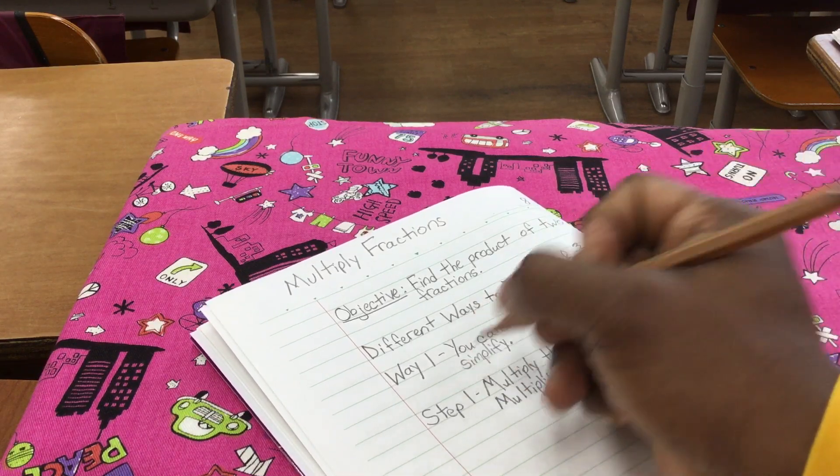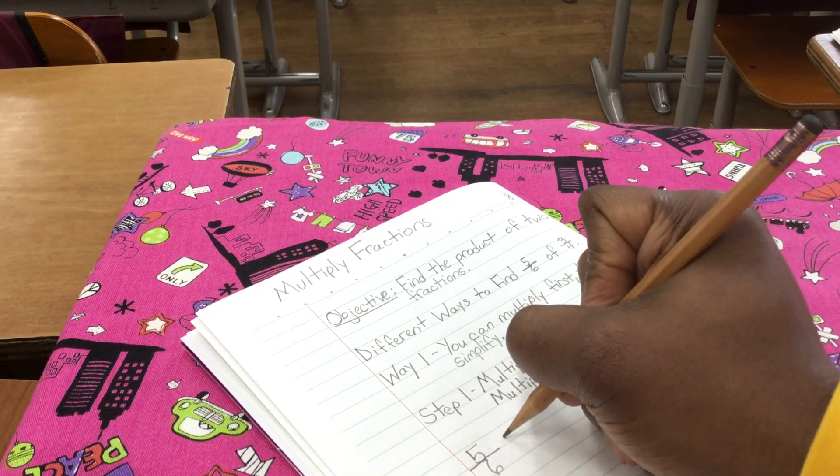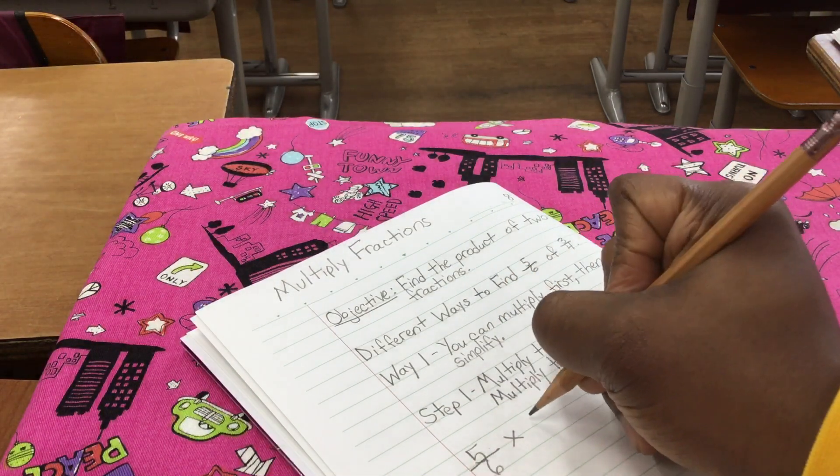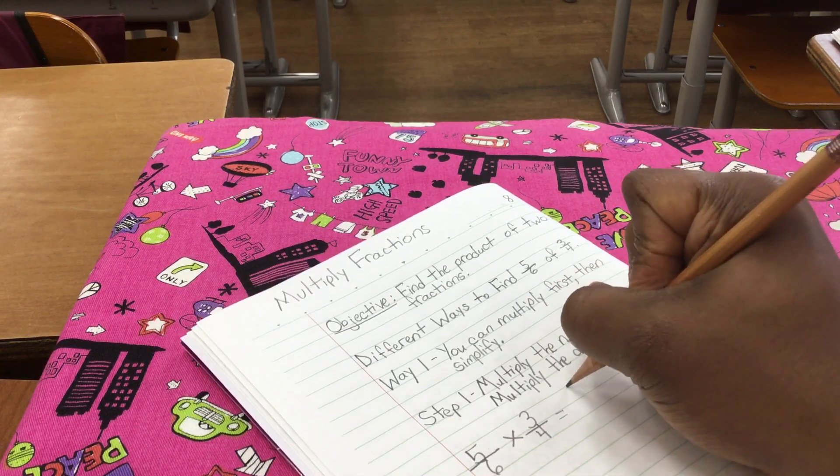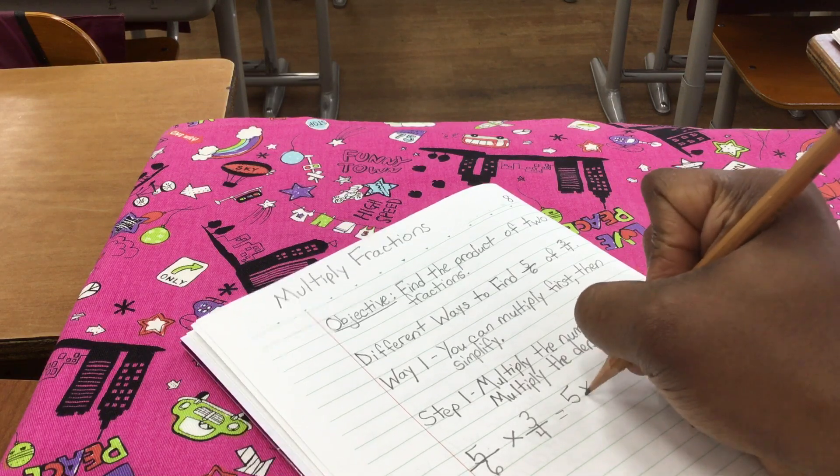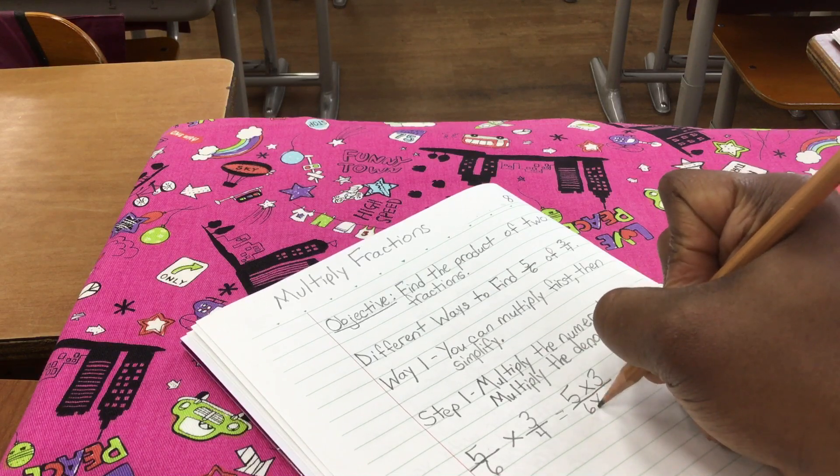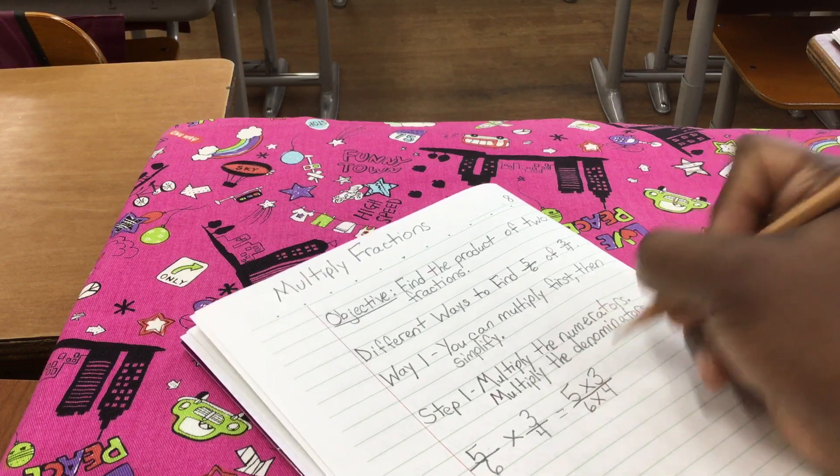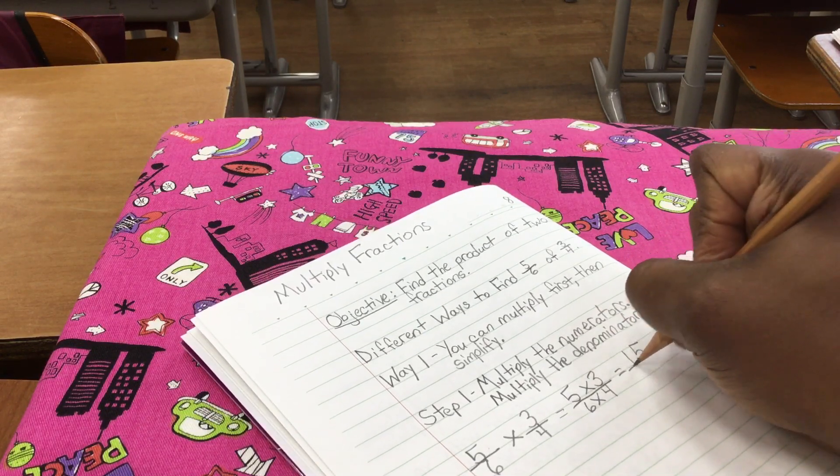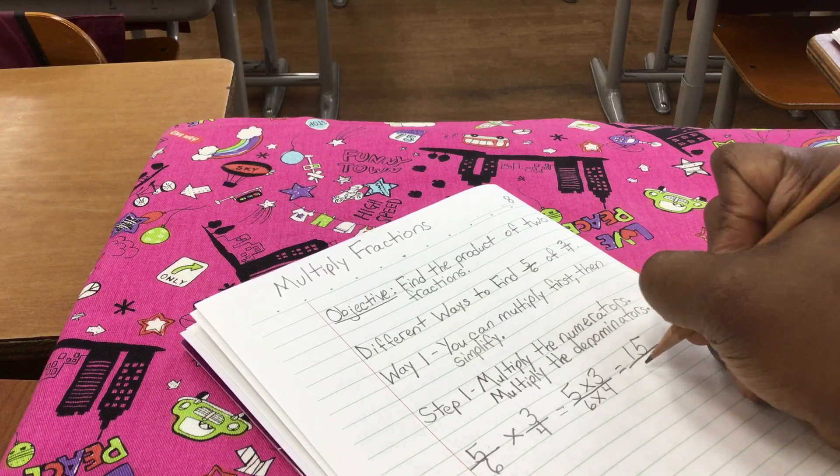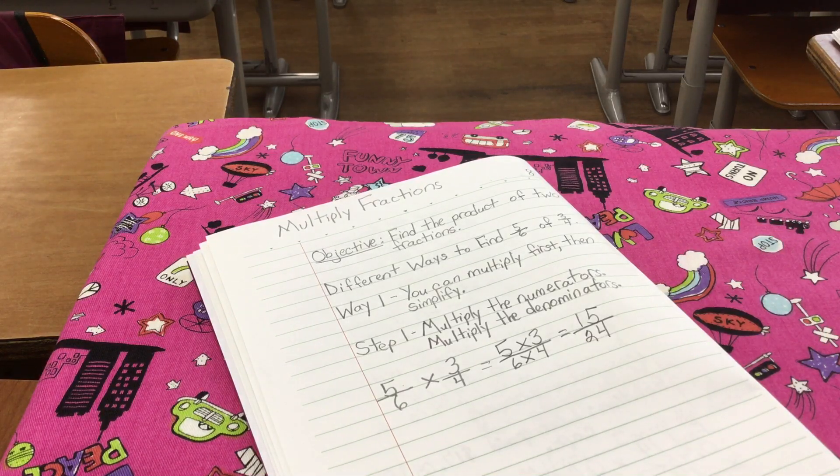So here's the example again. I'll write them a little bigger. Five-sixths times three-fourths. You just go right across. Multiply the numerators. Five times three. And then the denominators, six times four. Five times three, that gives us 15. And six times four gives us 24. So we have 15 twenty-fourths as our answer.